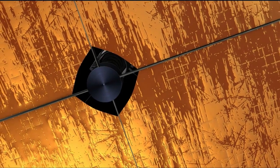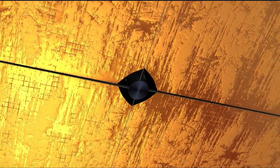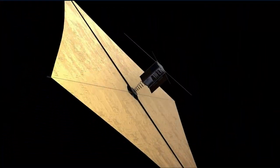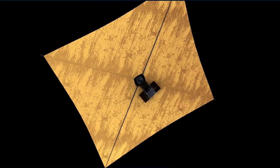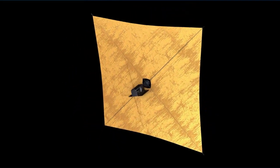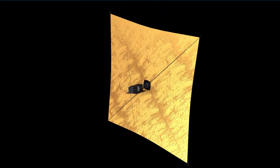Diffractive light sails would use small gratings embedded in thin films to take advantage of a property of light called diffraction, which causes light to spread out as it passes through a narrow opening. This would allow the spacecraft to make more efficient use of sunlight without sacrificing maneuverability.